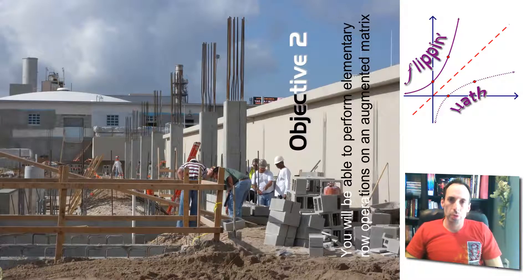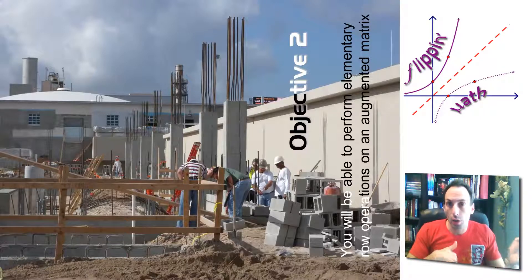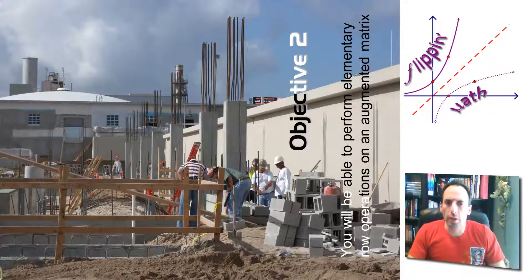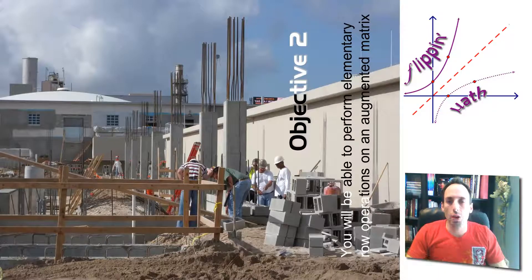All right, so we've been talking about elementary row operations in order to turn a system into its equivalent triangular form, because that's really easy to solve. So we're going to do the same exact things again, but we're going to do it in a matrix, specifically an augmented matrix.